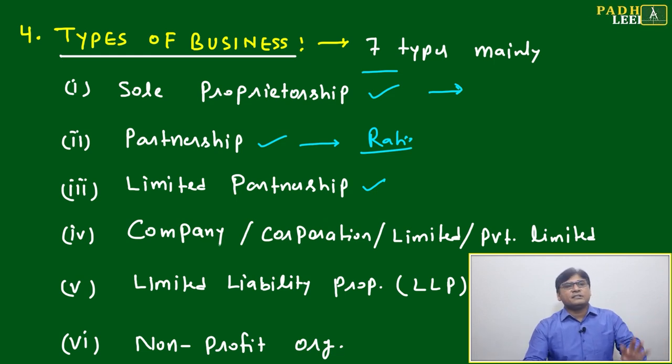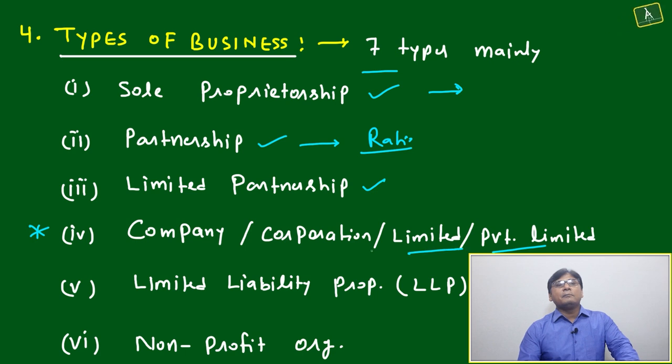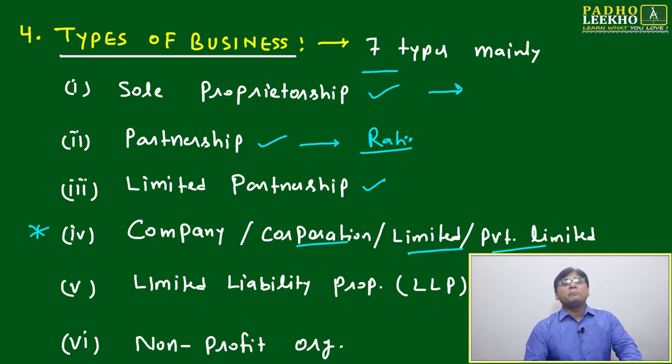When opening a company, it can become private limited, limited, or corporation - these are different types. Corporation has a different meaning and is the most complex business. Corporations are generally run by the central government.